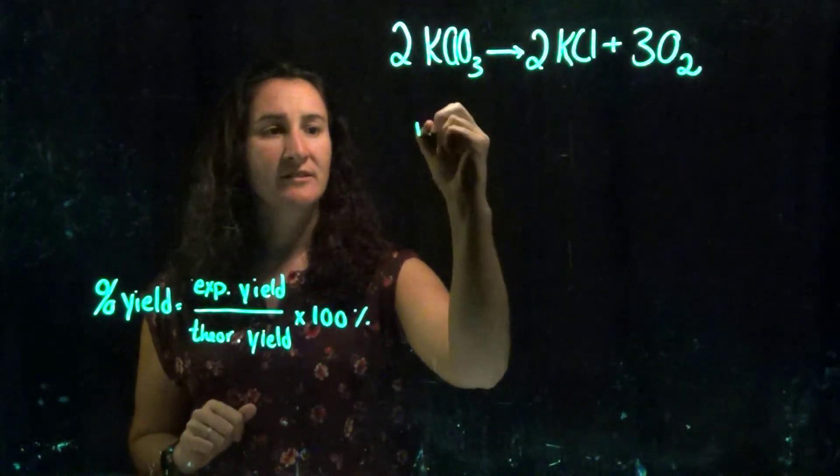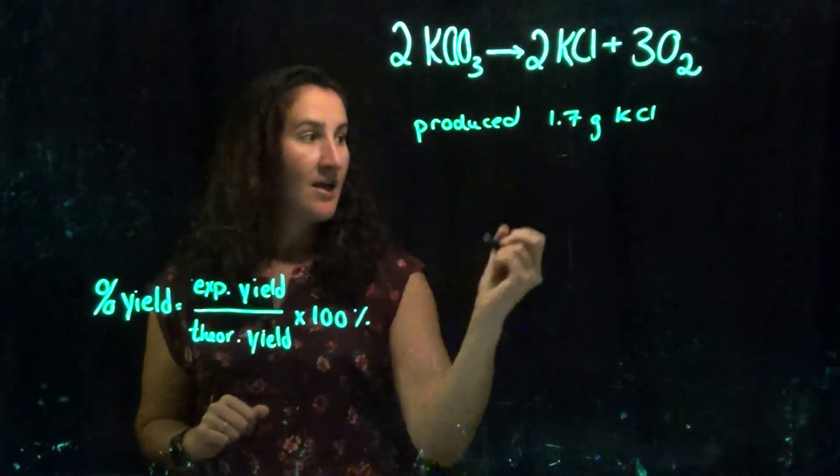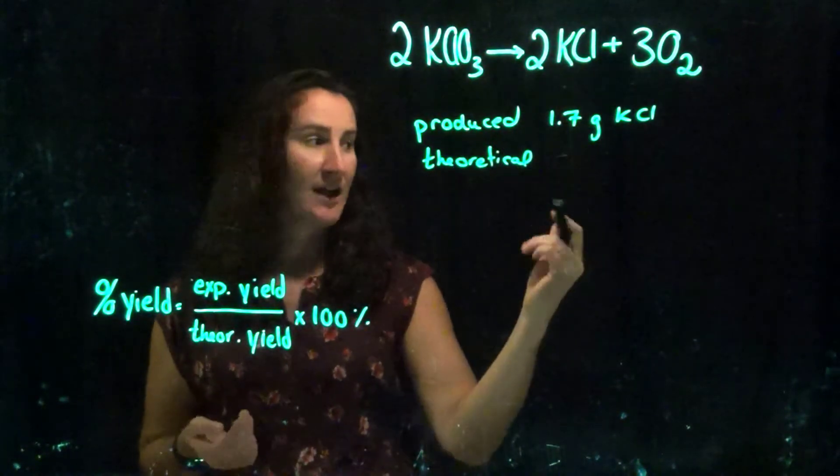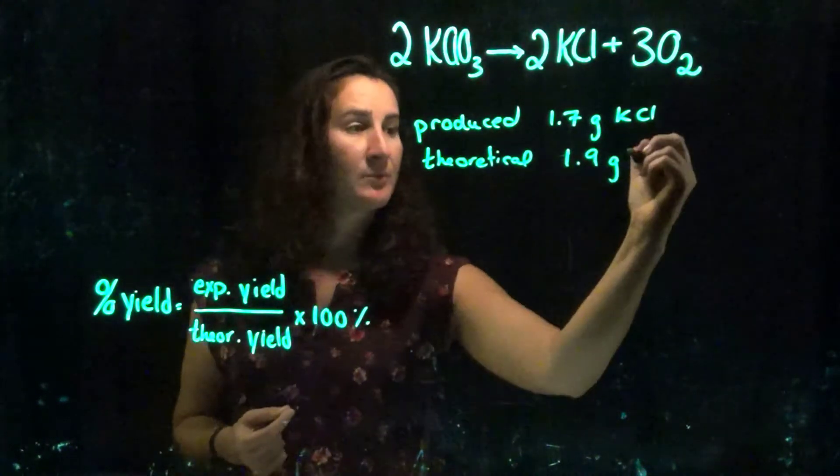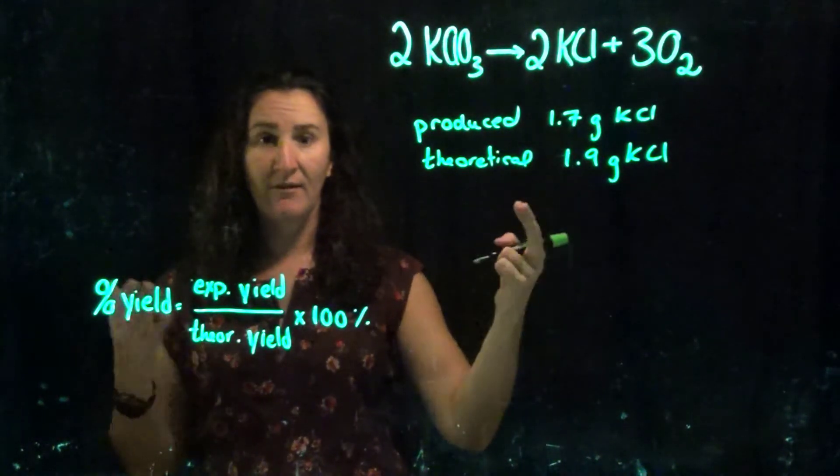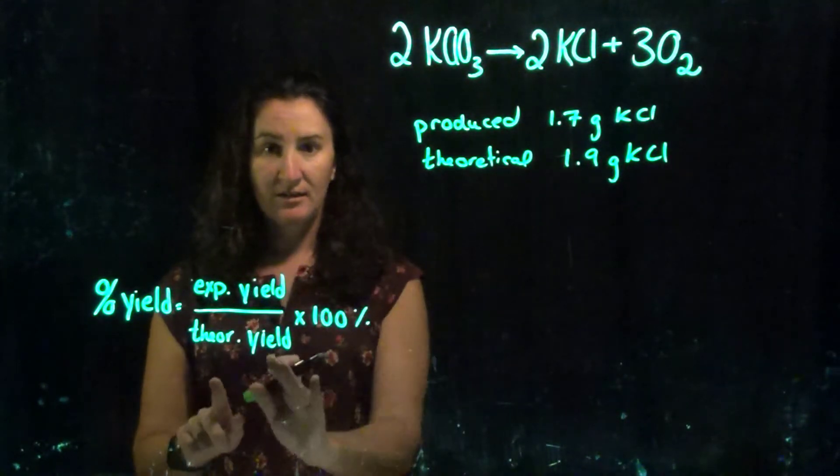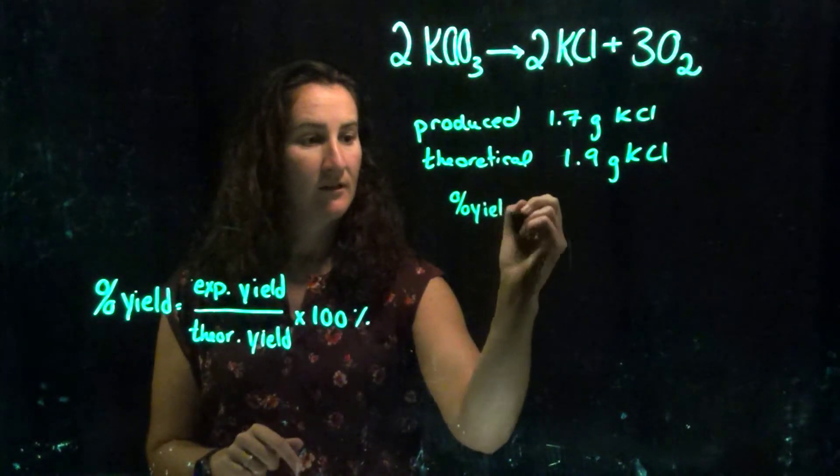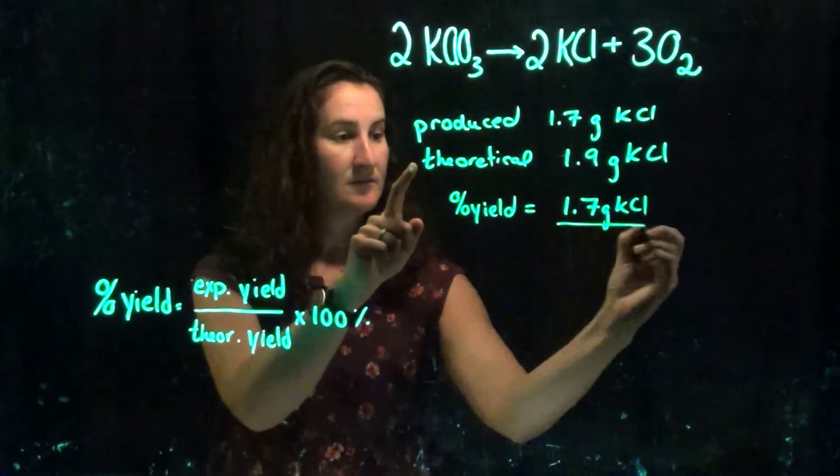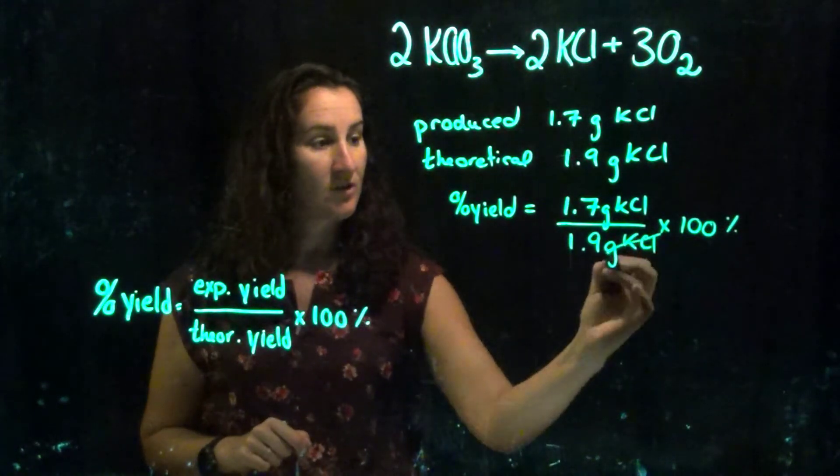Alright, so the first problem. Let's say we walked into the lab and we produced 1.7 grams of potassium chloride according to this reaction. Then my theoretical yield, I had already done all this and figured out how much starting material I had and how much I was going to produce potassium chloride. My math told me that I should theoretically be able to produce maximally 1.9 grams of potassium chloride. So if this is how much I produced, I went in the lab and I experimentally created that, and this is how much I could have produced in theory, what's my percent yield? So if we use this equation and just fill in each of the variables, we get percent yield equals experimental yield divided by my theoretical yield times 100 with units of percent.